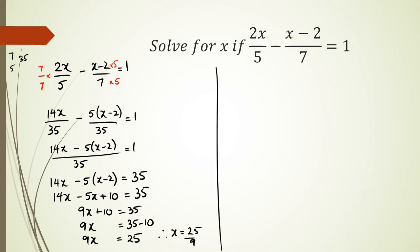9x is equal to 25, therefore x is equal to 25 over 9. All right, that's one way of doing it. The other method where I multiply the denominators by their respective numbers, I'm going to show you the second method.